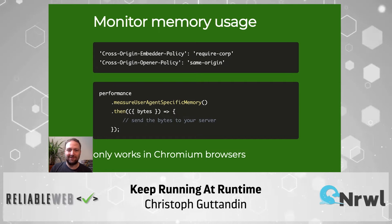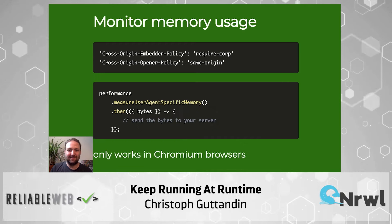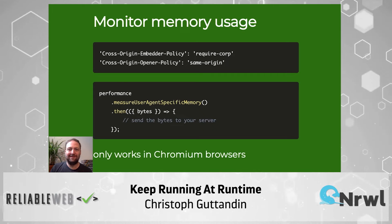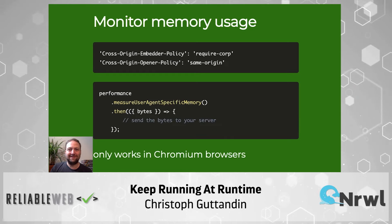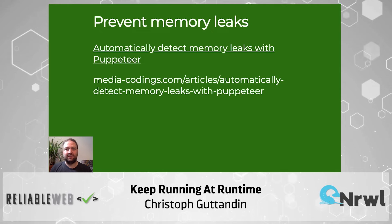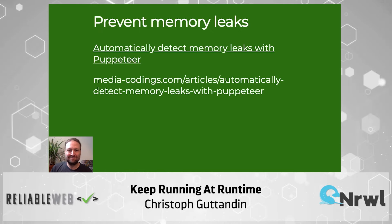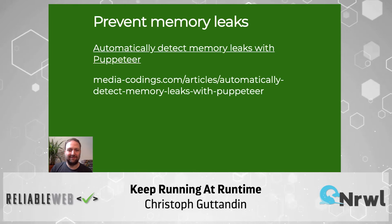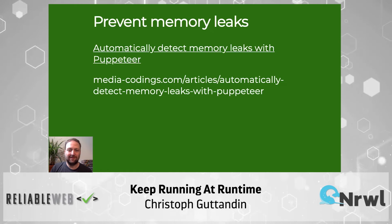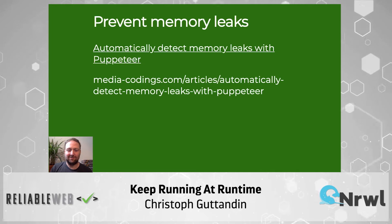Using memory information is another matter — it highly depends on your web app which numbers are acceptable and which signal a problem. As a general rule of thumb, watch out for ever-increasing memory: if it only increases and never really goes down again, you might have a memory leak somewhere in your code, and there's an article that shows a way to prevent the leak from ever coming back once fixed. Today's JavaScript engines are very smart and may change the memory layout of your application at runtime or from browser update to browser update, so you'll get slightly different numbers all the time — don't be worried about that.